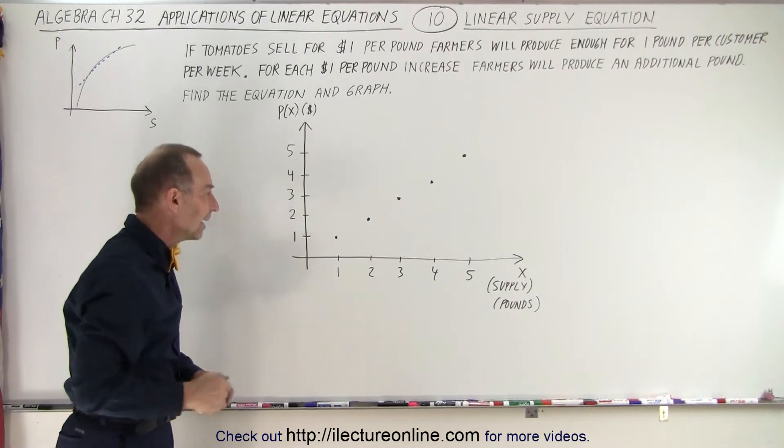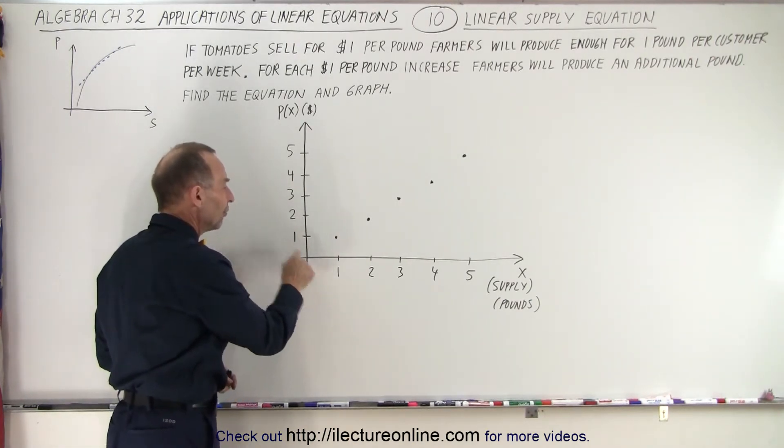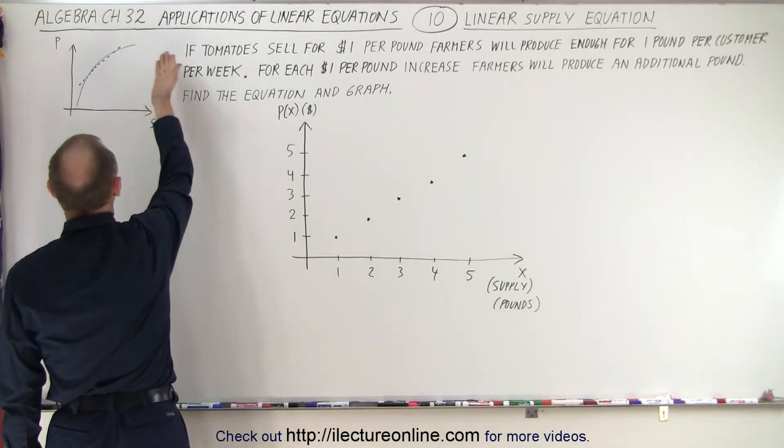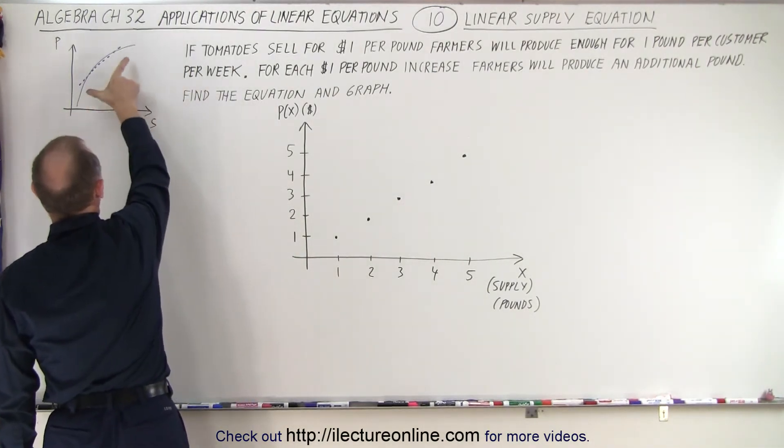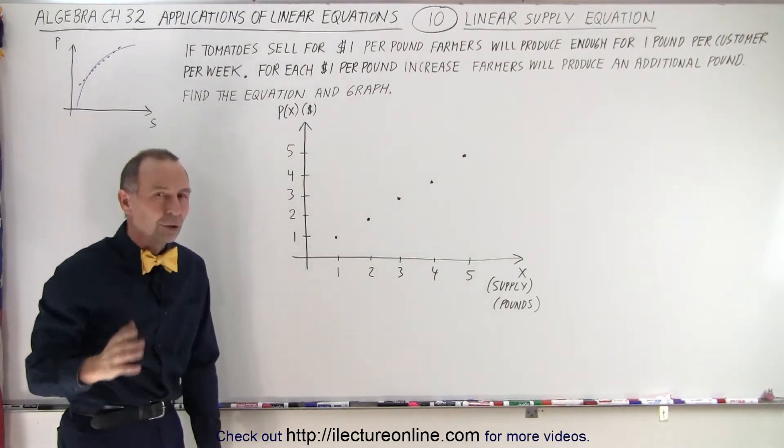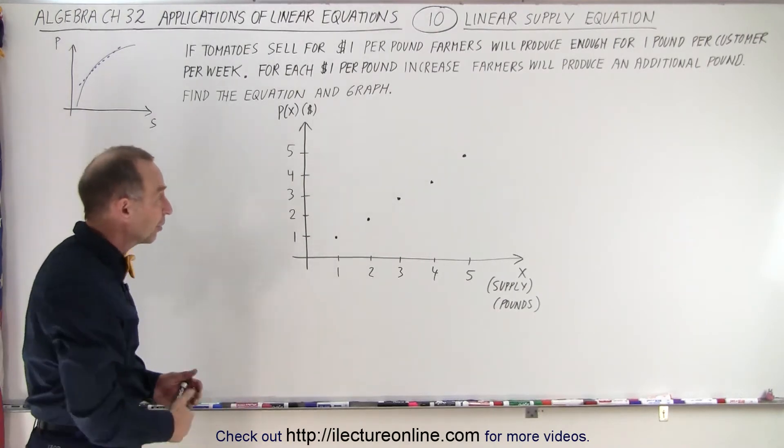Our curve would indicate that the price would have to go all the way down to zero for zero production to take place. So really, you can see that it tends to be a nonlinear curve, but for the middle part of curve, a straight line equation does a pretty good approximation of the situation. So it's actually a pretty valid way of looking at things.